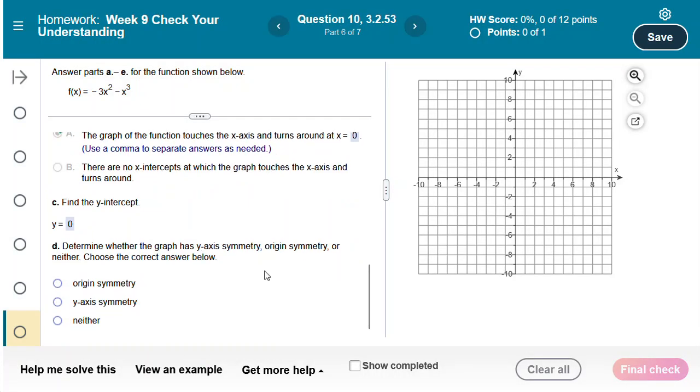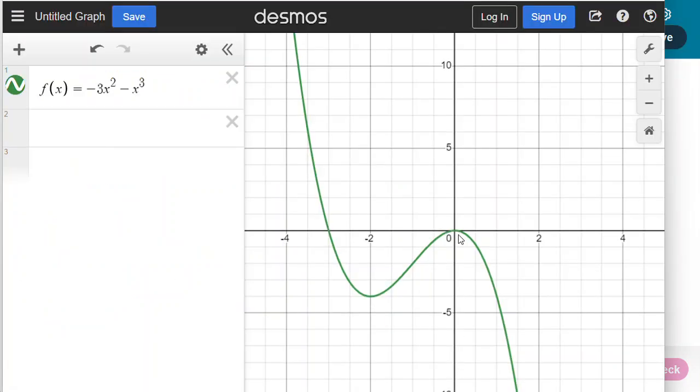The next question is about symmetry. Does the graph have y-axis symmetry, origin symmetry, or neither? When I look at this graph I can see that it is not symmetric around the y-axis. The y-axis is not a line of symmetry where the graph is a mirror reflection on either side of it.